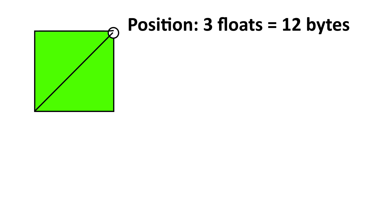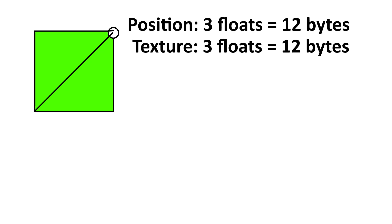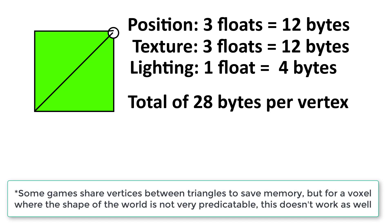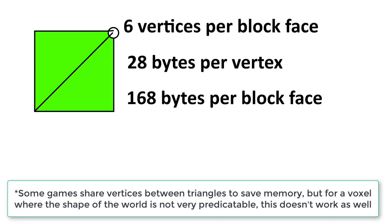Each vertex of a block face contains the following information: 3 floats for the vertex position, which is 12 bytes; 3 floats for the texture information, which is an additional 12 bytes; and then 1 float for the simple lighting, which is another 4 bytes — coming to a total of 28 bytes per vertex, or 168 bytes for the 6 vertices per block face.